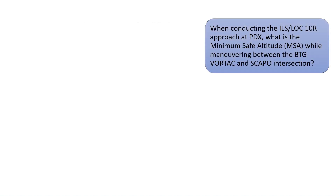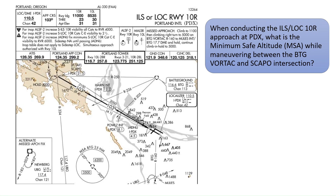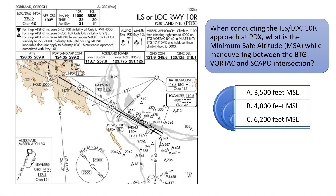When conducting the ILS/localizer approach to runway 10 right at Portland International Airport, what is the minimum safe altitude while maneuvering between the BTG Vortac and Scappo intersection? Suppose our aircraft was flying somewhere near the orange star in the chart, maneuvering between the BTG Vortac and the Scappo intersection. If we were flying on the 250-degree radial of the BTG Vortac and turned the OBS knob on our HSI or CDI to a heading of 250, the TO/FROM indicator would show a FROM indication, placing us to the west of the BTG Vortac, as illustrated in the minimum safe altitude radius near the bottom of the chart. Therefore, the minimum safe altitude and correct answer is A: 3,500 feet above mean sea level.